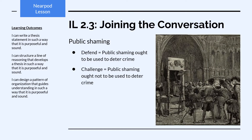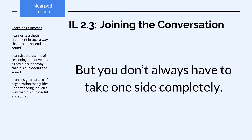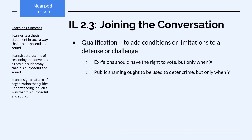Similarly, we could look at the issue of public shaming this way. The defend proposition would be that public shaming ought to be used to deter crime, and the challenge position would be that public shaming ought not to be used to deter crime. But when considering the different sides of an issue, keep in mind you don't always have to take one side completely. You can defend, challenge, or qualify that issue.